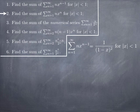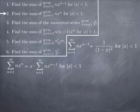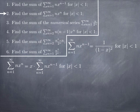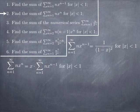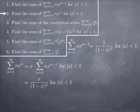In the next question, we want to find the sum for a series that looks almost exactly the same. The only difference is that the power of x is n instead of n minus 1. To get from power n-1 to power n, all we need to do is multiply by x. Since the series is over n, x is a constant with respect to the index, so we can write the series as x multiplied by the series from 1 to infinity of n·x^(n-1), which equals x over (1 minus x)², valid for |x| < 1.